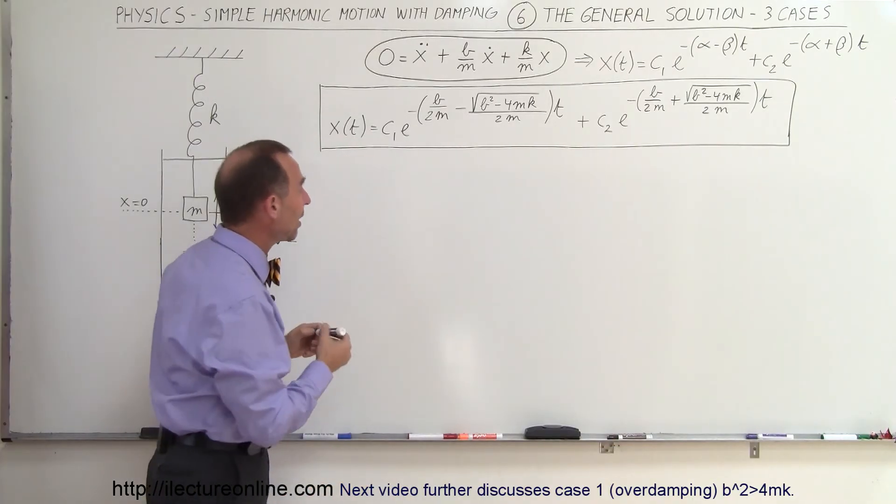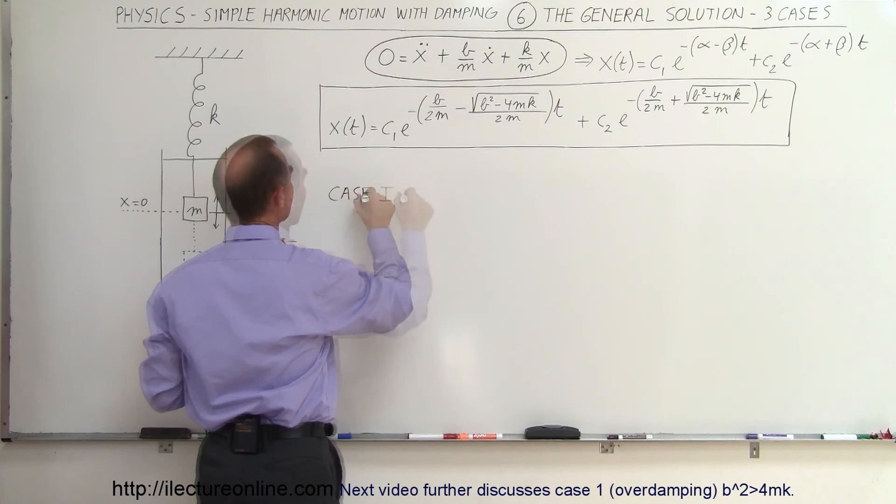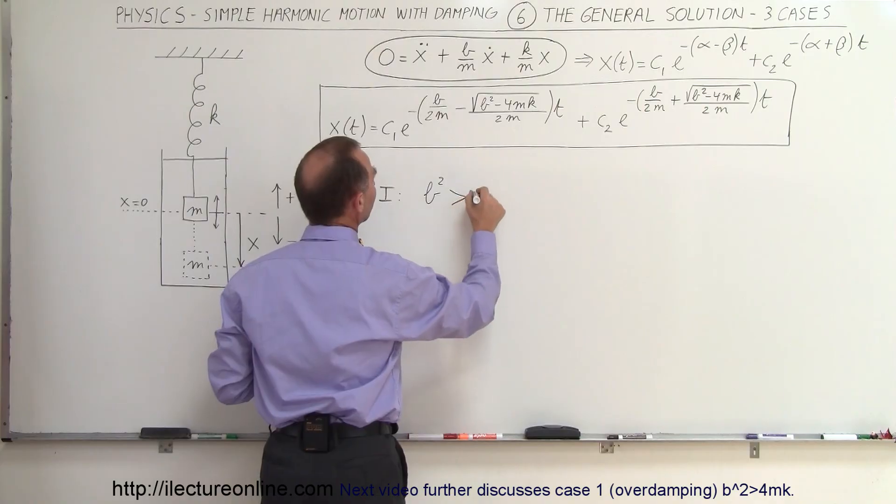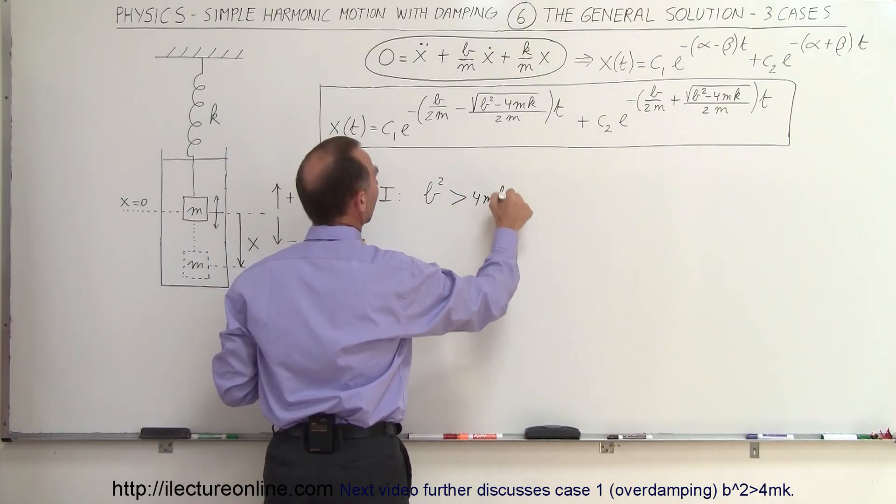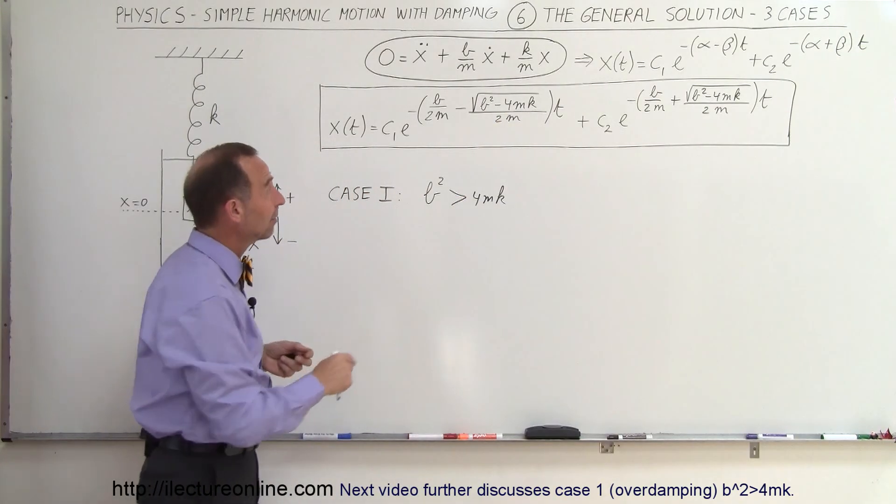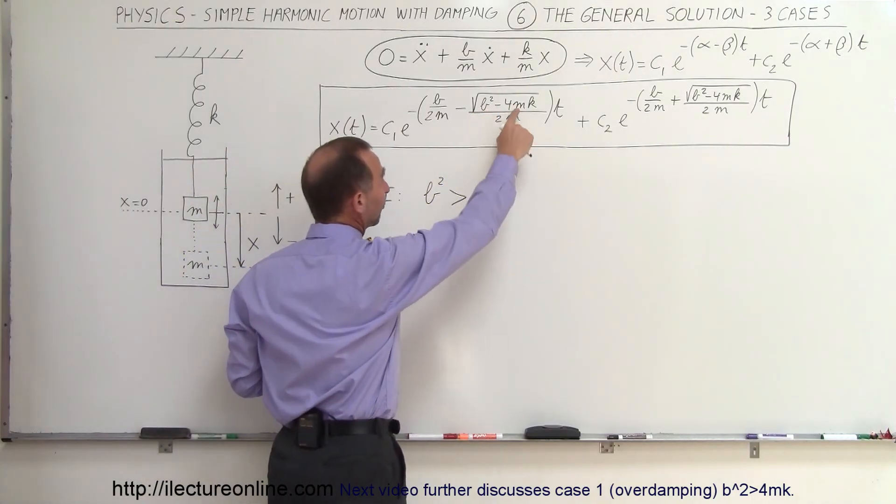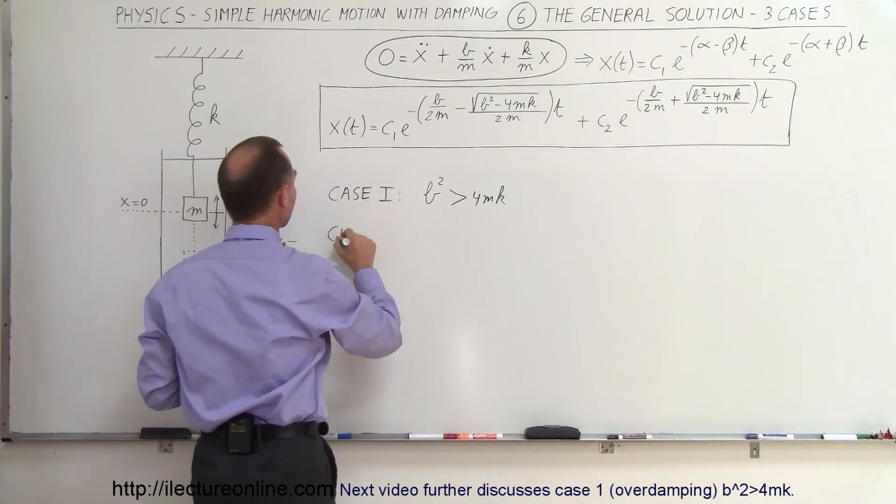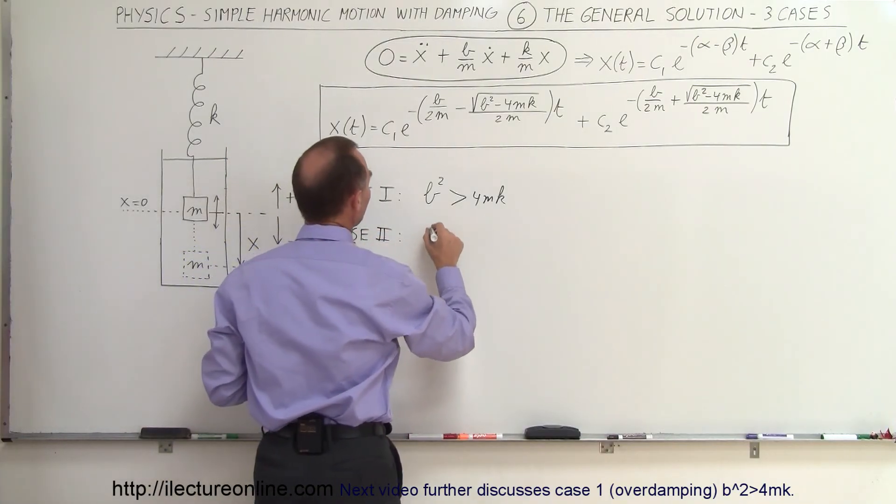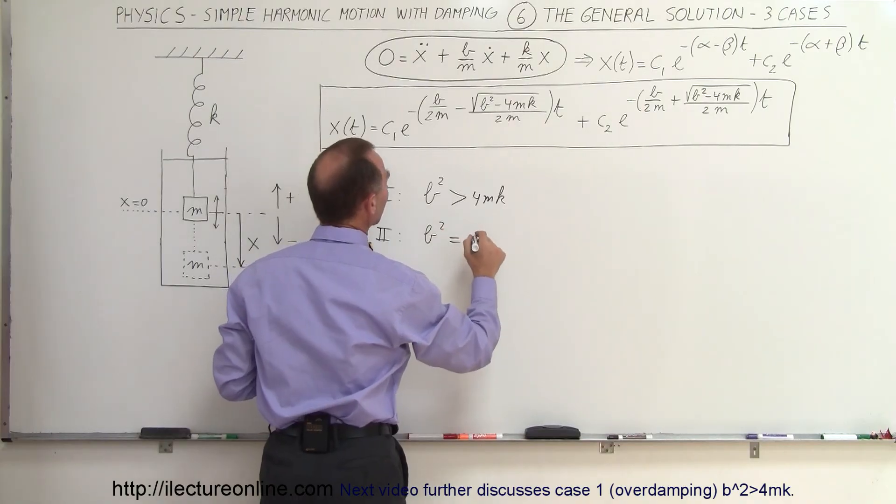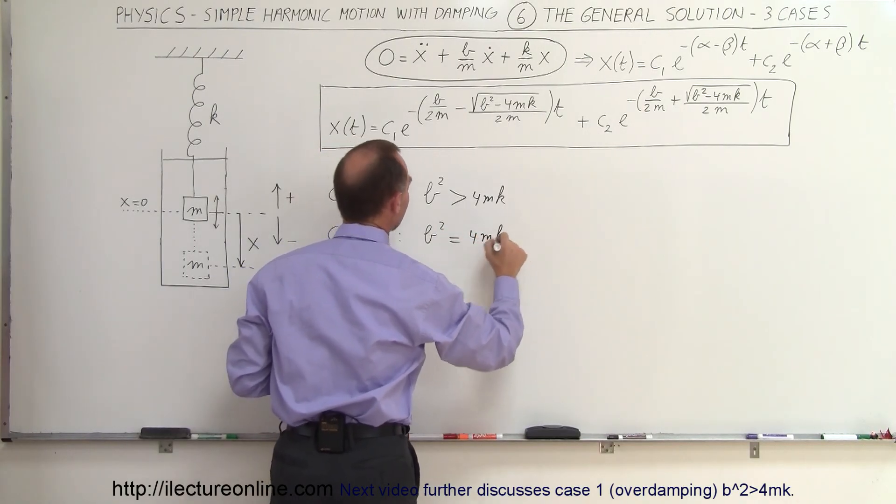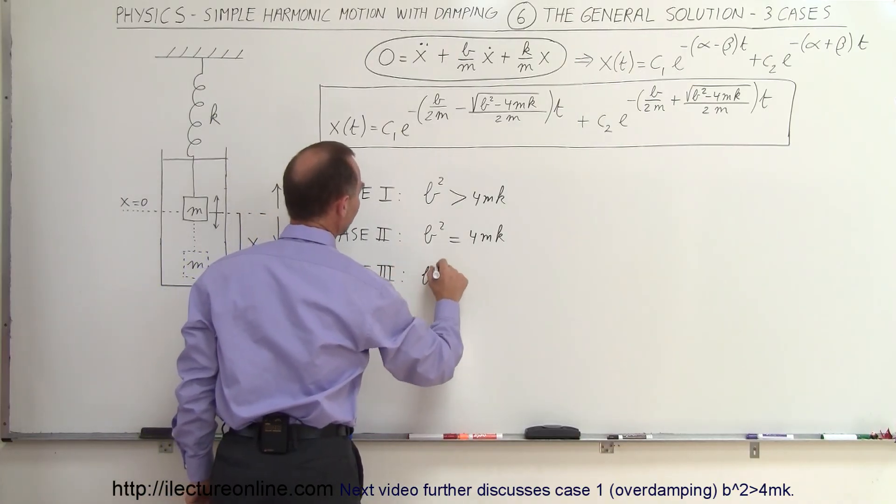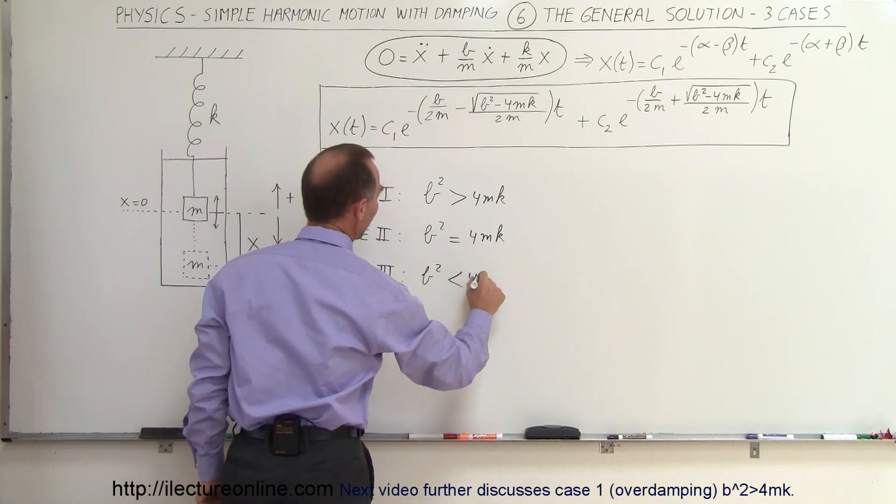So we have three possible cases. In case one, B squared is going to be greater than 4MK. Look at underneath the radical, in case that B squared is greater than 4MK, then B squared minus 4MK is a positive value. The second case is where B squared is equal to 4MK. And finally the third case, case three, is where B squared is less than 4MK.